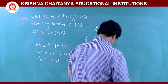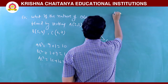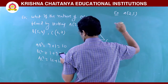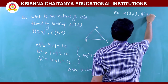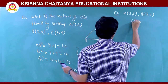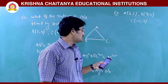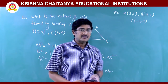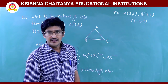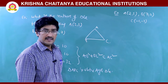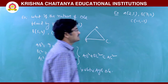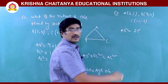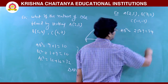One more example: A(2,5), B(7,2), C(−1,−2). We calculate AB² = (7−2)² + (2−5)² = 25 + 9 = 34. BC² = (7+1)² + (2+2)² = 64 + 4 = 68. AC² = (2+1)² + (5+2)² = 9 + 49 = 58.